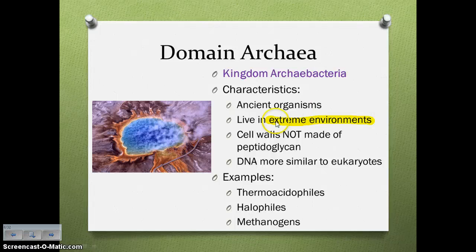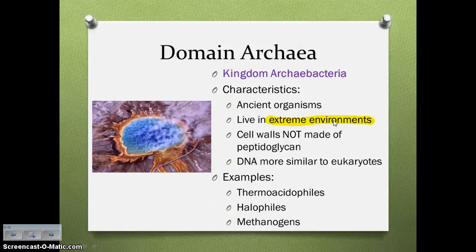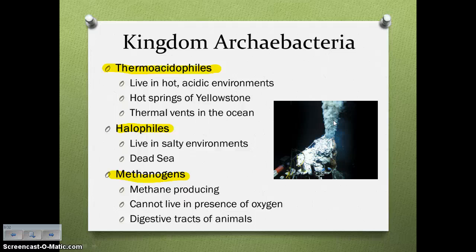Next up is the domain Archaea, which has the kingdom Archaebacteria. Archaea sounds like archaic, which means very old. So they are ancient organisms that live in extreme environments. Their cell walls are not made of peptidoglycan — they have a slightly different substance, and different lipids in the cell membrane. Their DNA is actually more similar to eukaryotes than to eubacteria. The examples are thermoacidophiles, halophiles, and methanogens — the three categories of archaebacteria, categorized based on what type of extreme environment they live in.